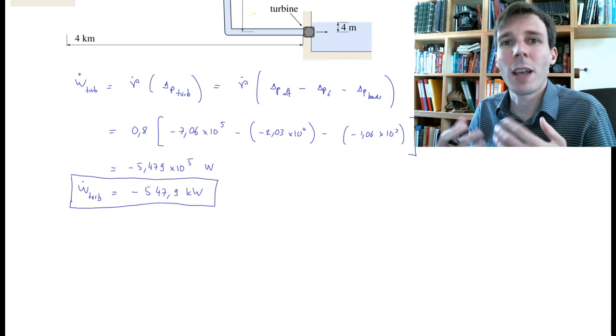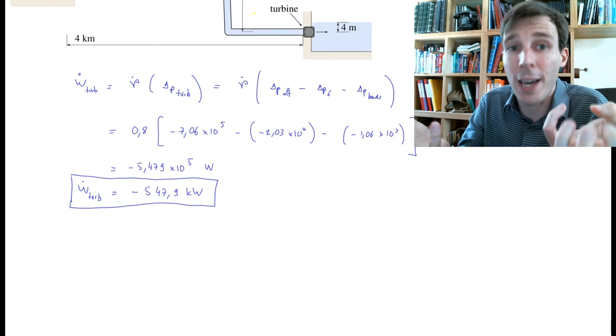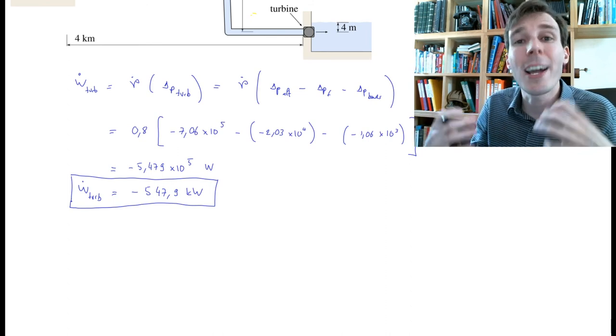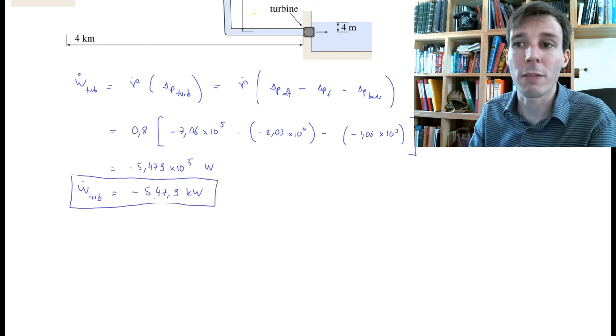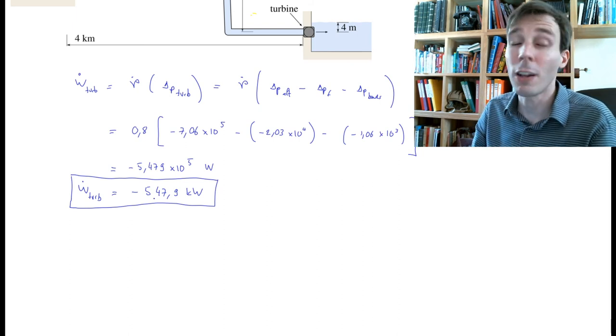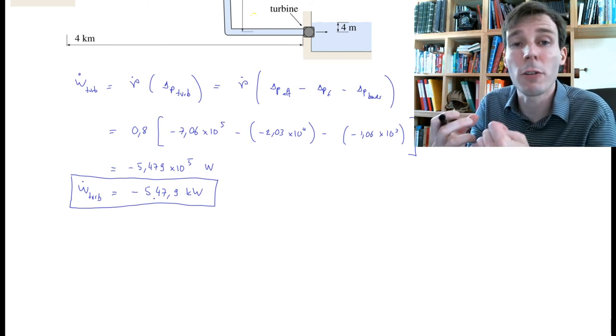I say 'made available' because the turbine has its own efficiency. The power that is being fed to the turbine, usually called the hydraulic power, has these 547-548 kilowatts.